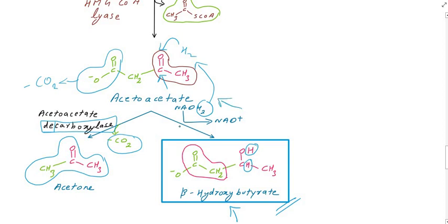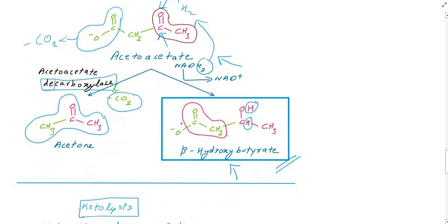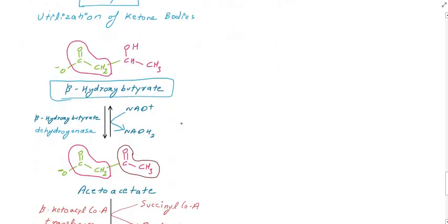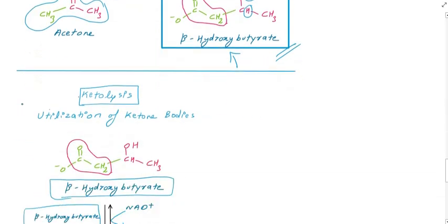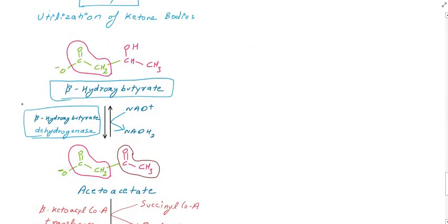In ketolysis, the process is the reverse. The enzyme beta-hydroxybutyrate dehydrogenase acts in reverse — it is the same enzyme used in ketogenesis but working in the opposite direction. This step uses NADH2 and produces the oxidized form.